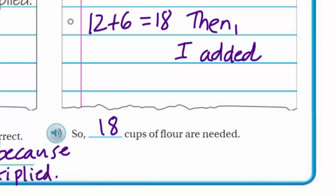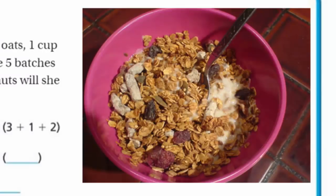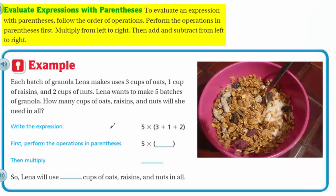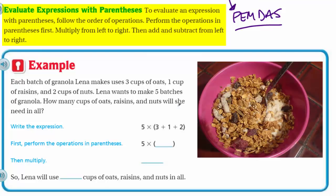Let's move on. Check this out — looks like some yummy granola. Evaluate expressions with parentheses. To evaluate an expression with parentheses, follow the order of operations — PEMDAS. Perform the operations in the parentheses first — that's why the P is first, right there in front. Then multiply from left to right. Then add and subtract from left to right, just like we read.